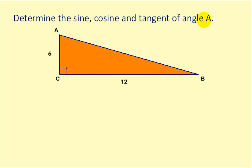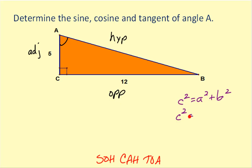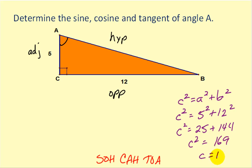Let's determine the sine, cosine, and tangent of angle A. Here's our angle A — the hypotenuse is identified, if we bisect angle A this would be the opposite side, and this leaves the adjacent side. Before we find these three values, notice that the length of the hypotenuse is missing, so we need to apply the Pythagorean theorem: C squared equals A squared plus B squared. We would have C squared equals 5 squared plus 12 squared, which is 25 plus 144. C squared equals 169, so C equals 13.